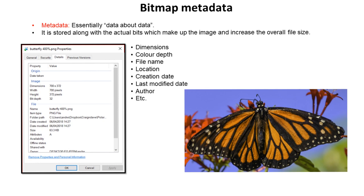When you receive an image on your computer it obviously stores all the information about the color of every single pixel, but along with that information, extra information is contained in the file and stored about the image. This metadata increases the overall file size.